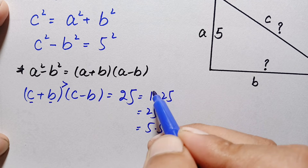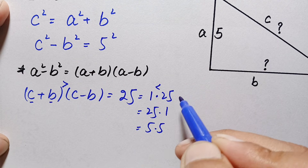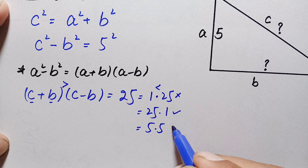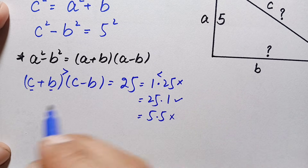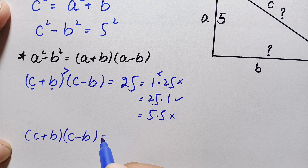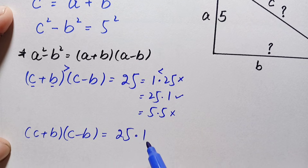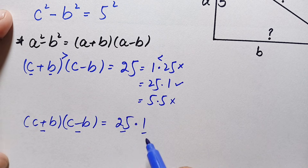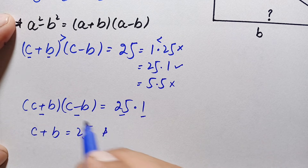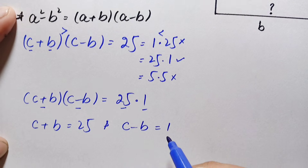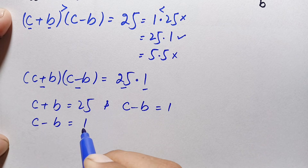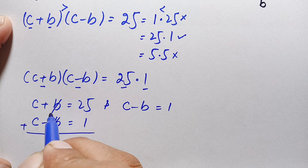The factor pair 1 × 25 cannot match because 1 is smaller than 25, so we reject it. We also reject the pair 5 × 5. We take the pair 25 × 1, so the equation becomes (c + b)(c - b) = 25 × 1. From here we set c + b = 25 and c - b = 1.